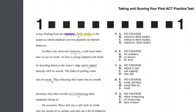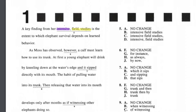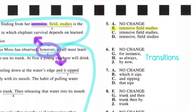Question five is another punctuation question. The only difference is where the comma goes. The noun is 'field studies' and the adjective is 'intensive.' There's no reason for a comma between 'intensive' and 'field,' and no reason for a comma between 'studies' and 'is.' The right answer is B — no comma at all. Don't be afraid to answer with no punctuation.